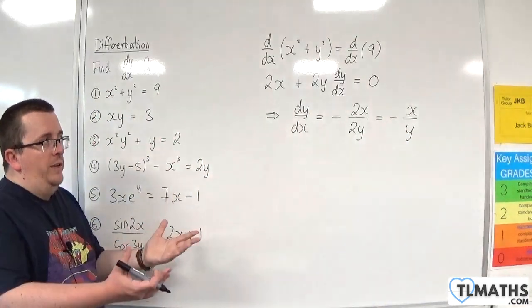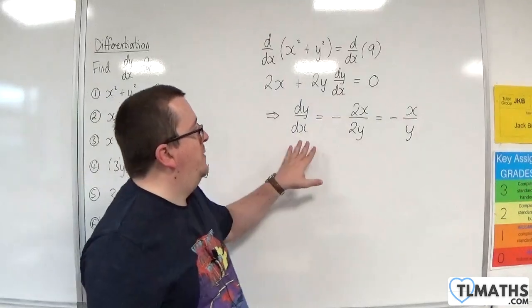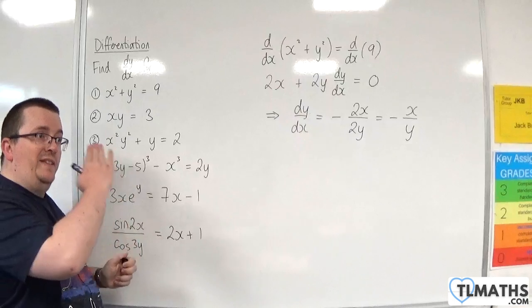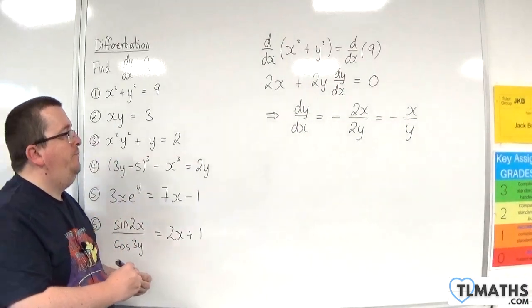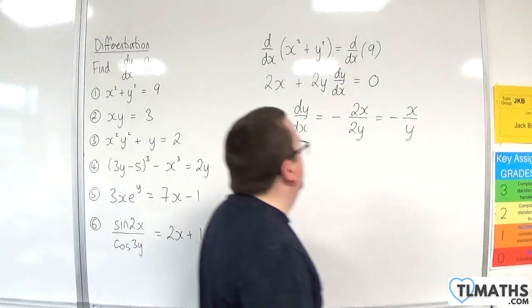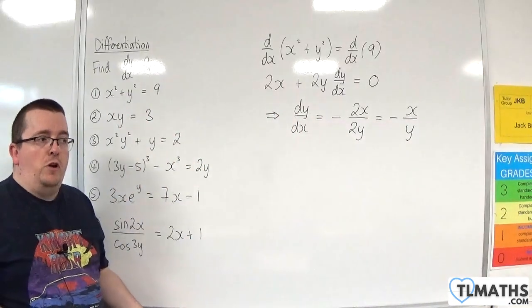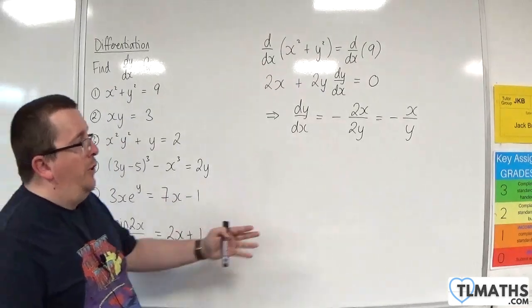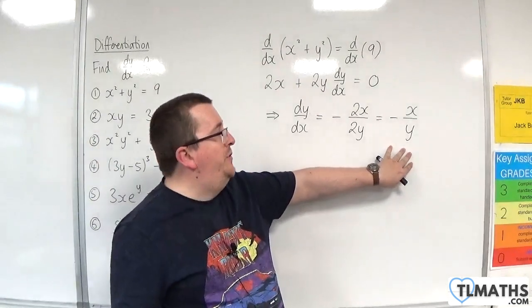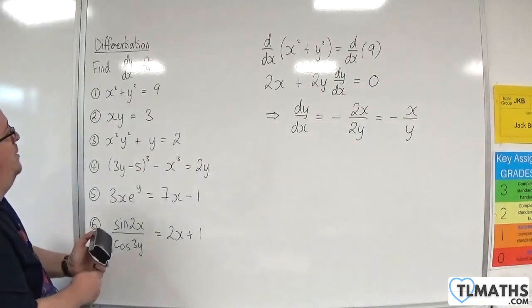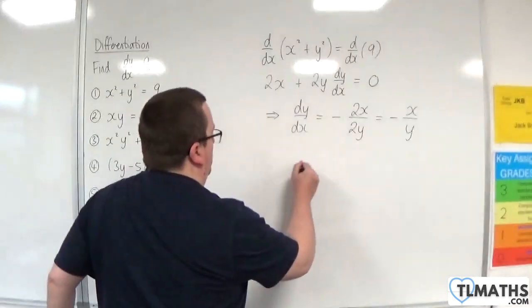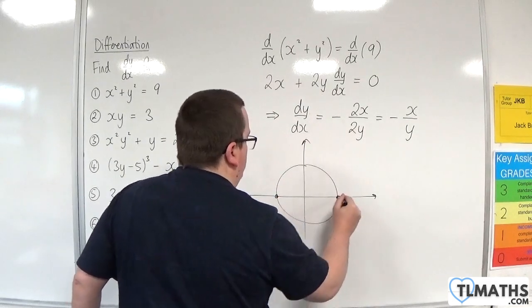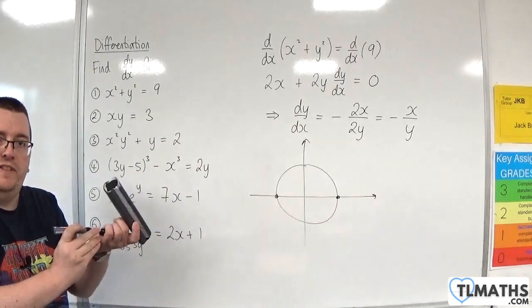If you have a pair of coordinates that lie on the circle, you can substitute them in and that will tell you the gradient of the tangent at any point. When y is 0, you get an asymptote for dy by dx because you're dividing by 0. That occurs because the circle when y is 0 gives vertical tangents at those points.